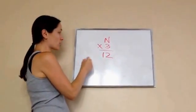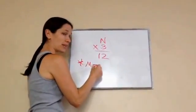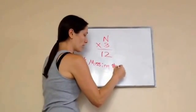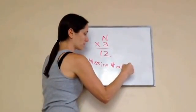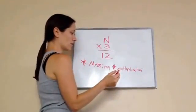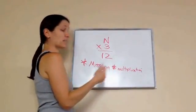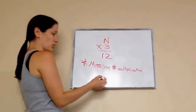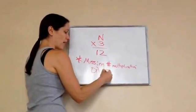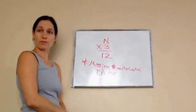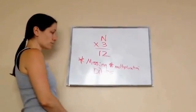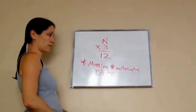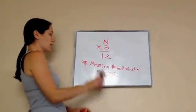So, the rule here is when you have a missing number in multiplication, missing factor. If you have a missing factor in multiplication, you will always divide to get your answer. Always. Always divide. Got it?